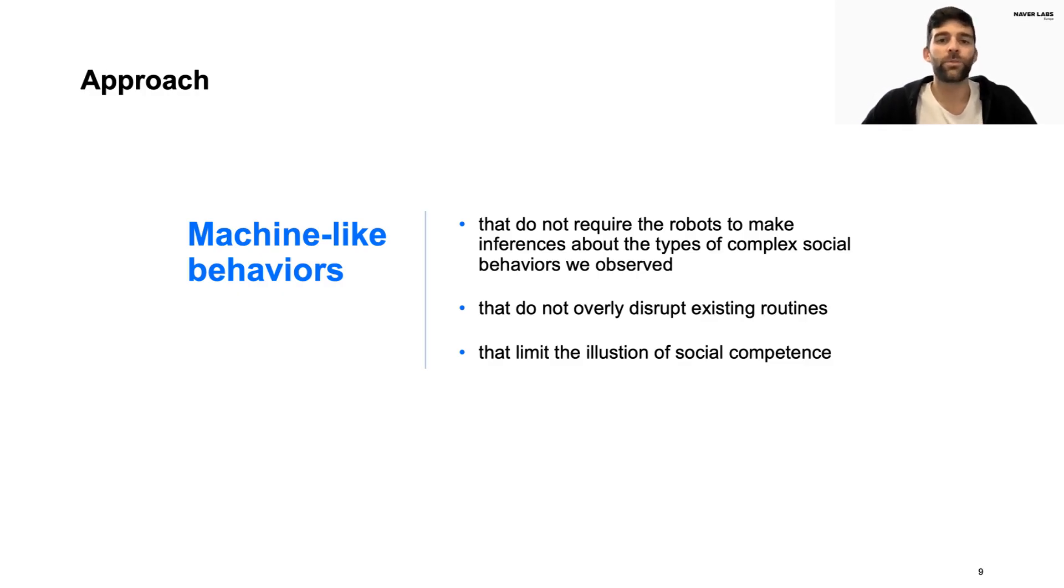This motivated us to explore machine-like behaviors that can overcome some of the limitations of fully imitating human behaviors. Machine-like behaviors should not require complex inferences about the same social behaviors, but still avoid disrupting the existing routines, unlike existing robots that, for example, use loud voice messages to express their intention. Finally, we believe that this approach can limit the illusion of social competence, as the robot behavior would not generate false expectations about its social capabilities.